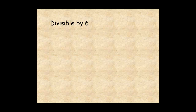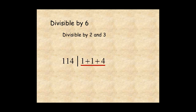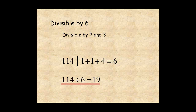A number is divisible by 6 if it's divisible by 2 and 3. This means it has to satisfy the rule for divisibility by 2 and divisibility by 3. For example, the number 114: the last digit is even, so it's divisible by 2. The sum of the digits, 1 plus 1 plus 4, is equal to 6. Since 6 is divisible by 3, the number must be divisible by 3. So since 114 is divisible by 2 and 3, it must also be divisible by 6. Sure enough, 114 divided by 6 is 19 with no remainder.